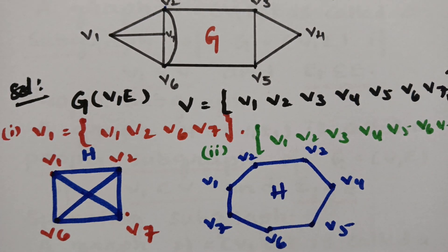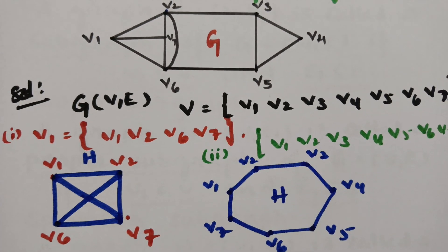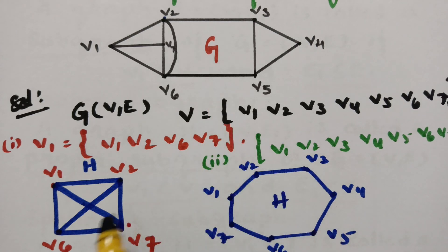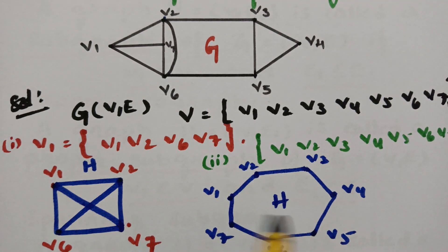This is how we construct subgraphs. This is the main graph G, and these are its subgraphs. You can make many more subgraphs from a given graph.